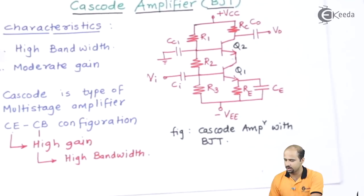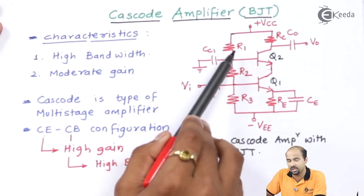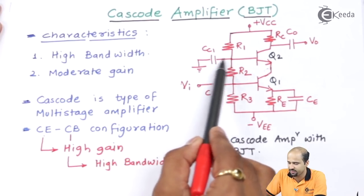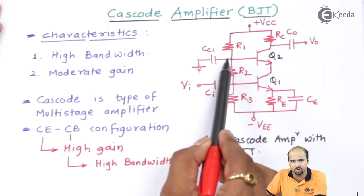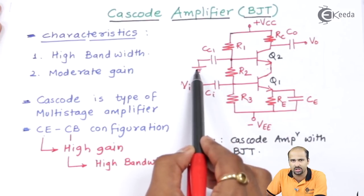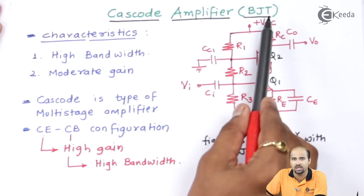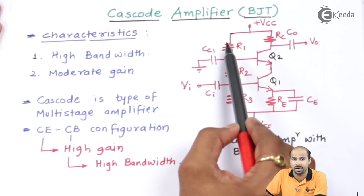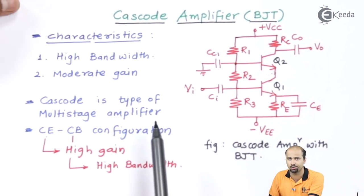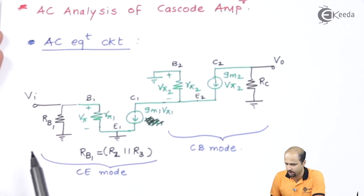If we consider the AC analysis, then R1 also becomes short-circuited — it will be redundant. Why? Because if CC1 becomes short-circuited, then R1's first terminal is connected to ground and R1's other terminal is also connected to ground. So R1 will become redundant — R1 will not come into picture at the base of Q1 or Q2.